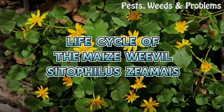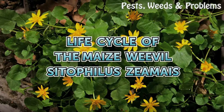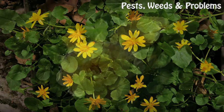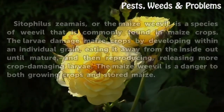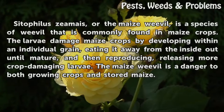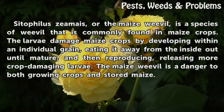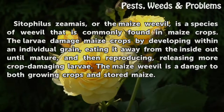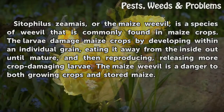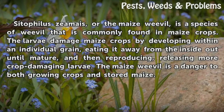Life cycle of the maize weevil, Sitophilus zeamais. Sitophilus zeamais, or the maize weevil, is a species of weevil that is commonly found in maize crops. The larvae damage maize crops by developing within an individual grain, eating it away from the inside out until mature, and then reproducing, releasing more crop-damaging larvae. The maize weevil is a danger to both growing crops and stored maize.